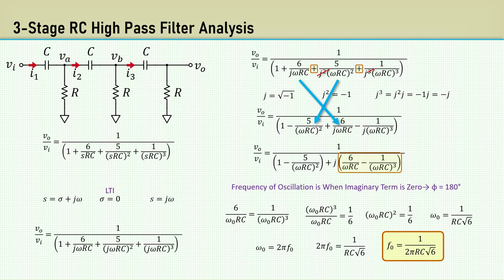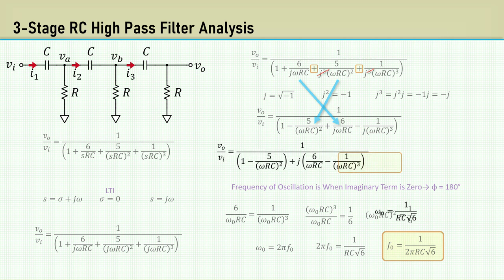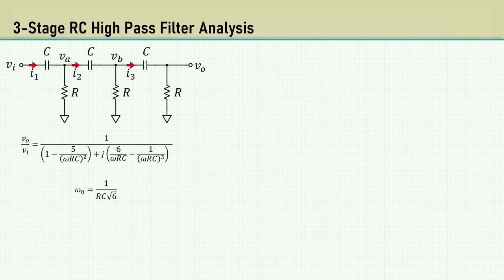And we get this very simple equation for the frequency of oscillation. All that math and we come out with a capacitive reactance formula with the square root of 6 in it.